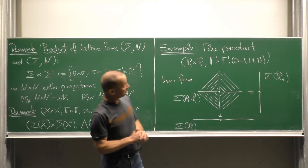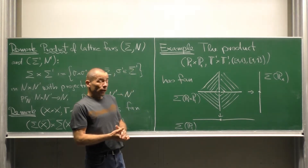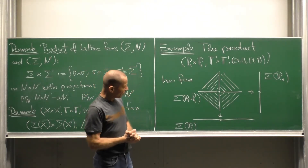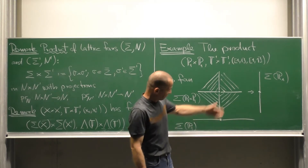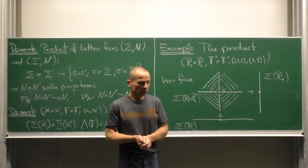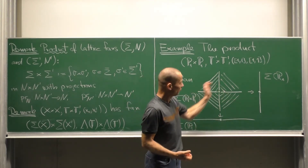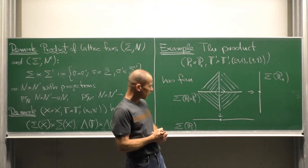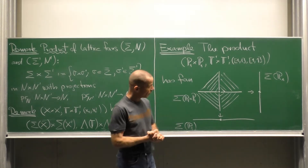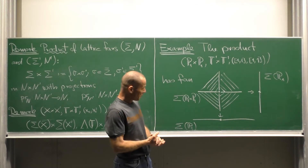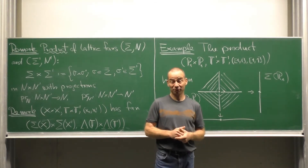Let us see an example. Look at the product of the projective line P¹ with itself and we want to know what is the fan of this product. Here we have the fan of the projective line — just two maximal cones, the two rays. Here is the second factor. Now we take the product fan, which in this situation means we end up with the fan having the four quadrants as its maximal cones. This is the fan of the product P¹ × P¹ as a toric variety, and we see how the projection maps look — in particular we directly see that they are maps of fans.